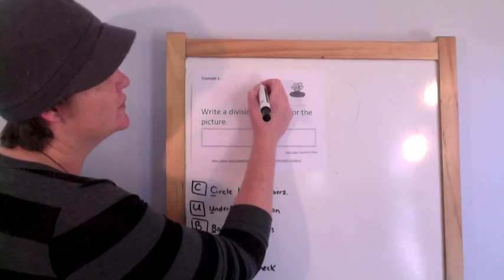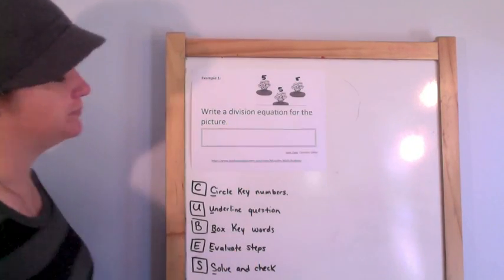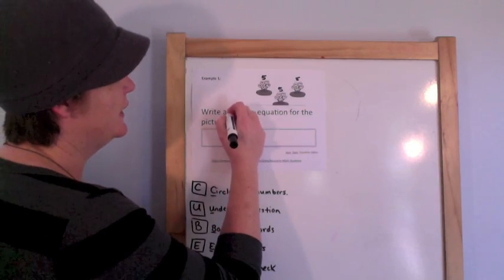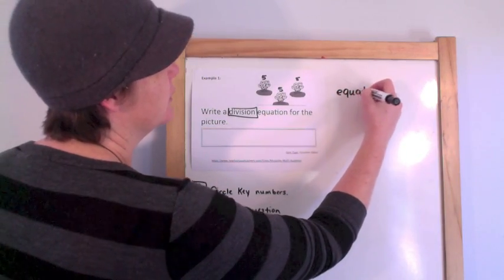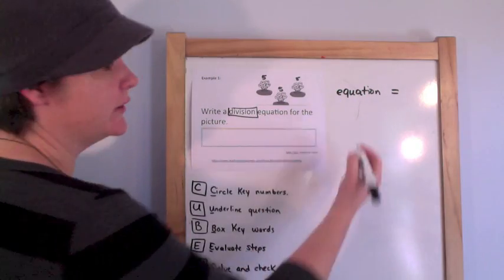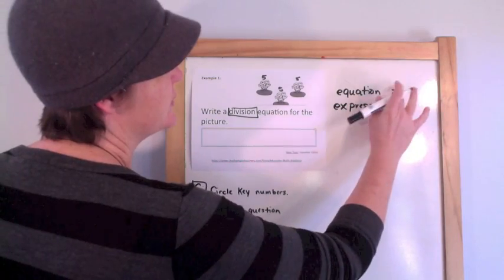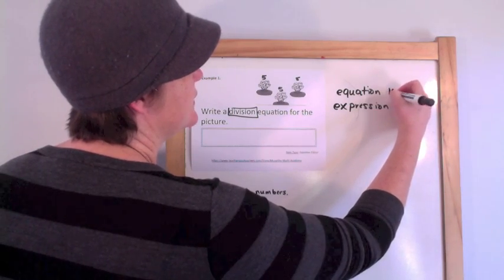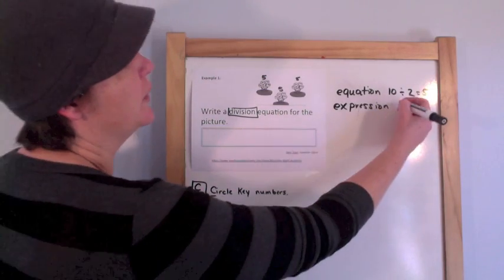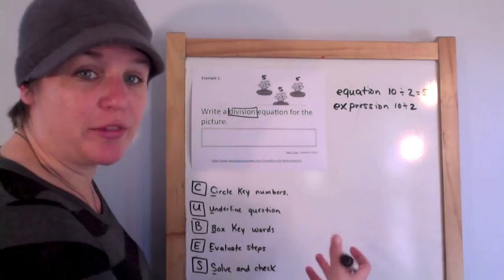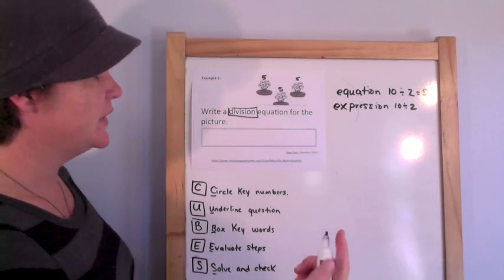We have 5, 5, and 5 in each row. Okay, but it's asking me to write a division equation. An equation has an equal sign. An expression does not. So for example, 10 divided by 2 equals 5. That would be an equation because it has an equal sign. Whereas 10 divided by 2 without the equal sign would just be an expression. Alright, so there's just a quick tidbit for you.